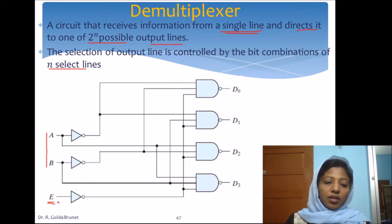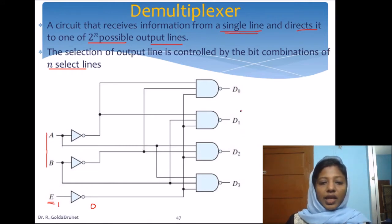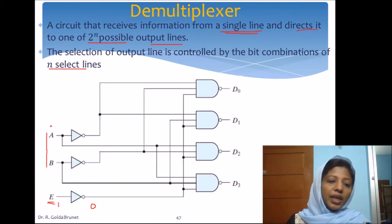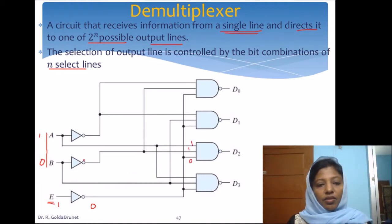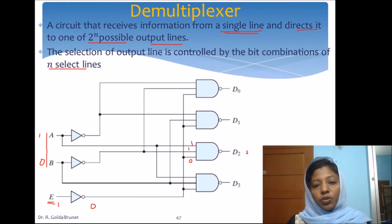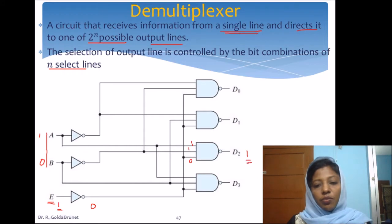Say E is 1 and E-naught is 0. That means I want to pass the information 1 to any one of these lines D0 to D3, based on the input to A and B. Say A is 1 and B is 0. In that case, this NAND gate will have inputs 1 for A and B, enable comes to be 0, and the NAND gate will give output 1. So D2 is 1, and the information E is passed on to D2 based on the inputs to lines A and B.